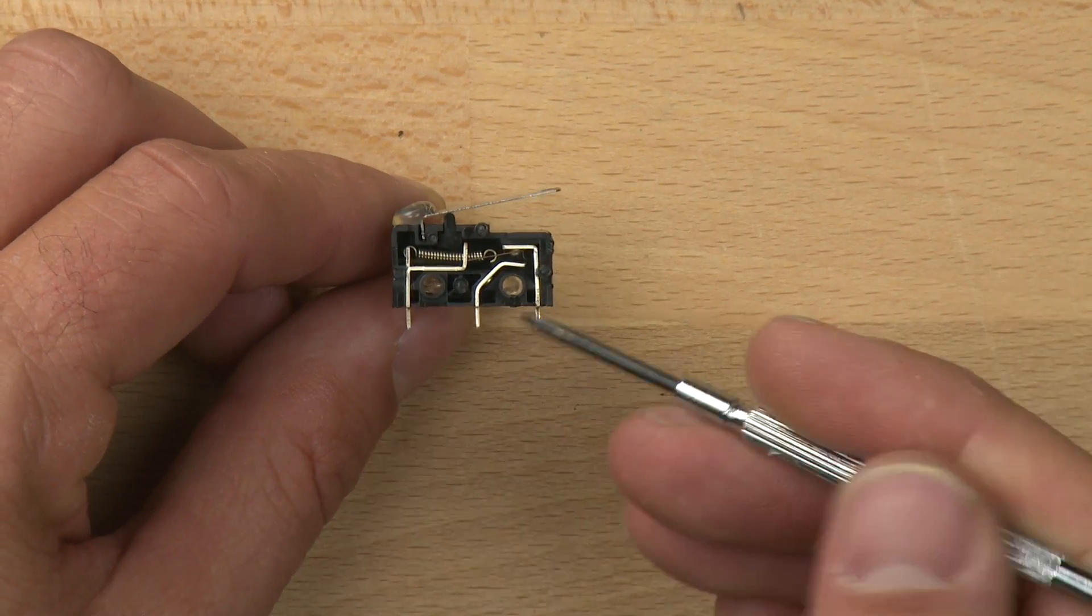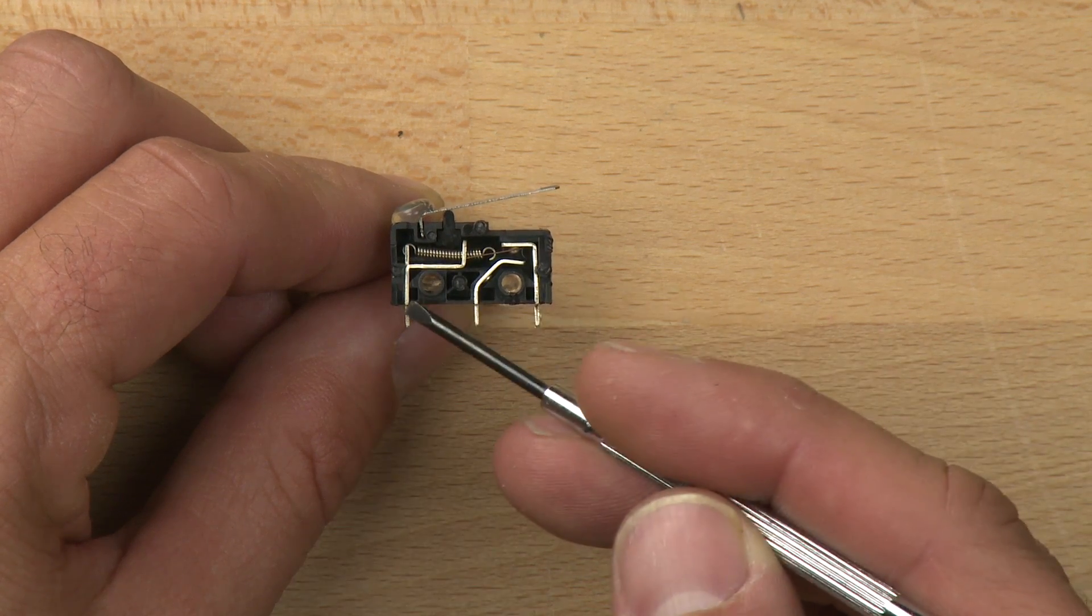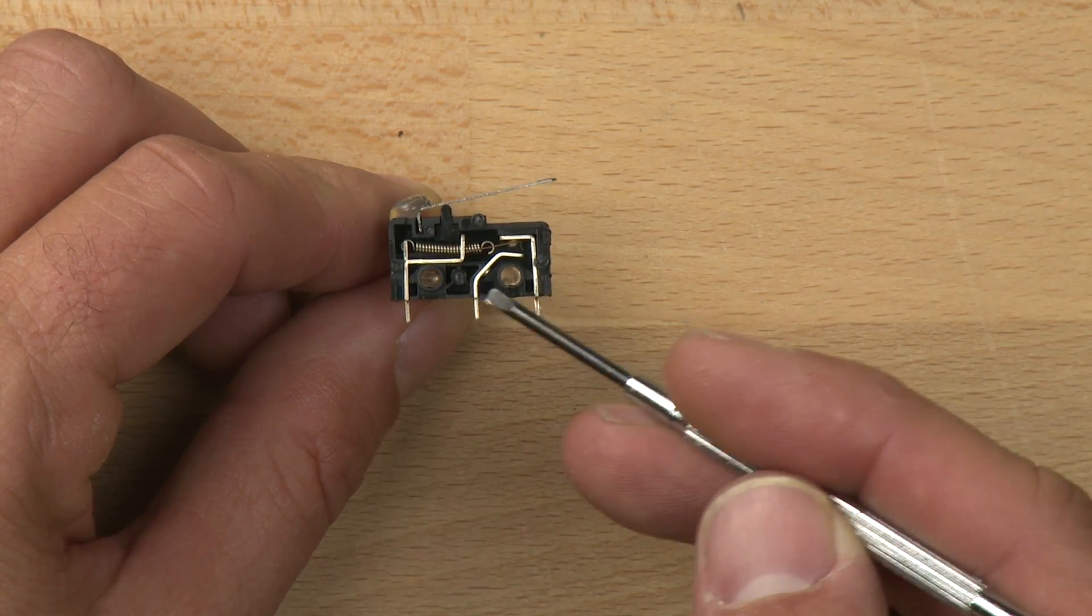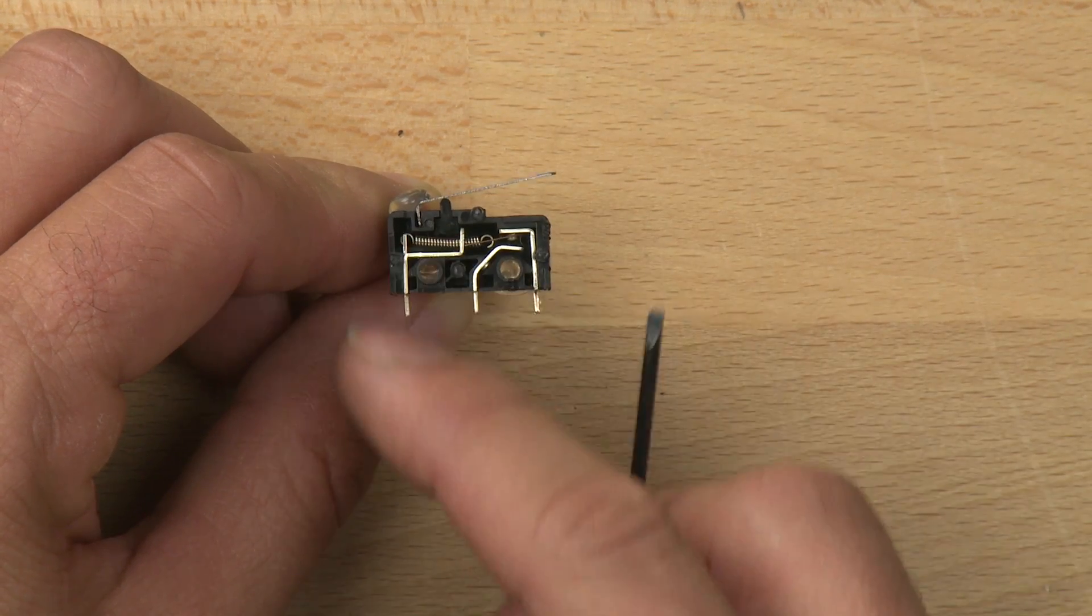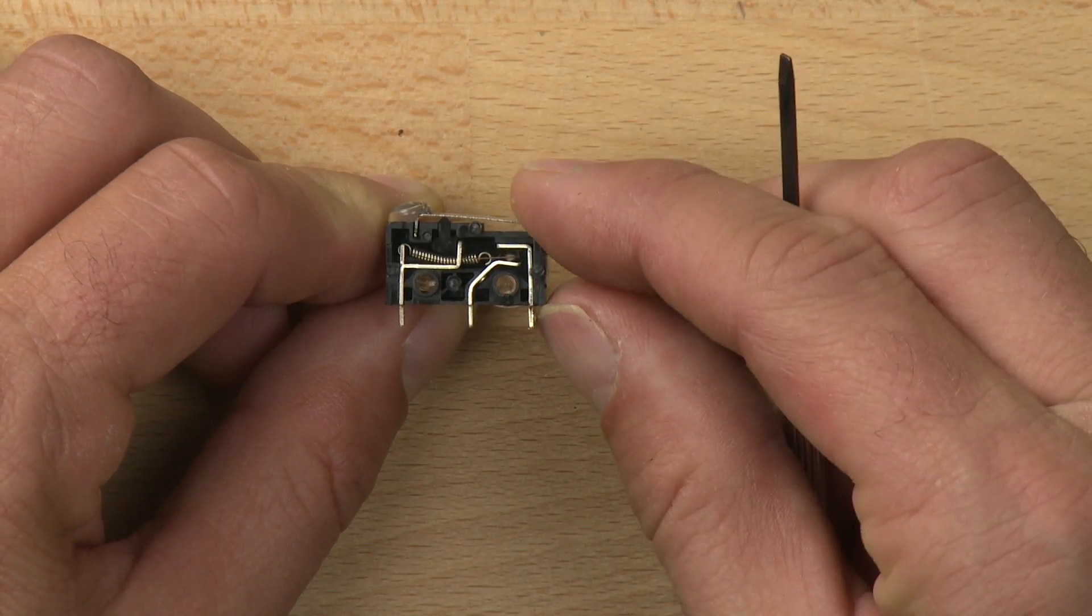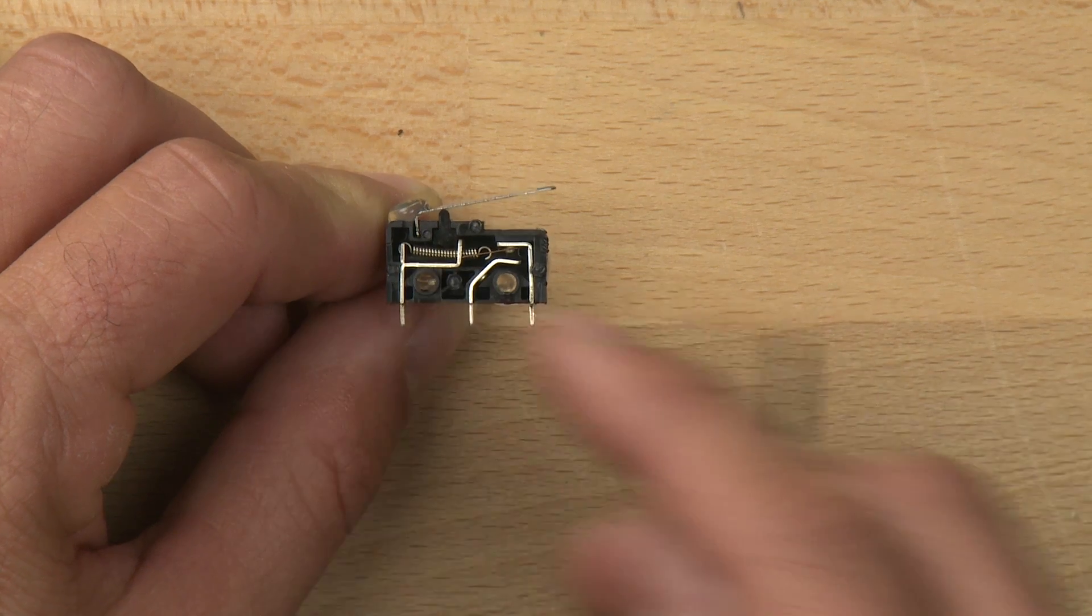There are two contacts here. There's one pole here and two throws. What that means is when the switch is open, it can let the power flow in one circuit. When it's closed, it can let the power flow in another circuit or it can just close that circuit.